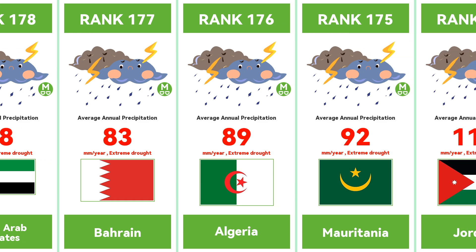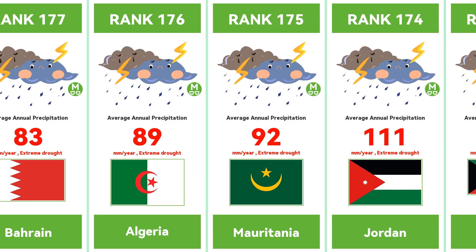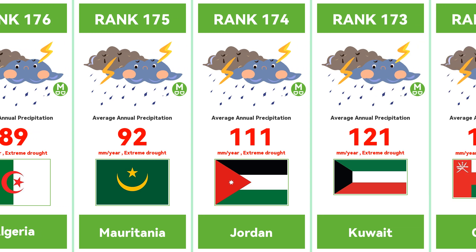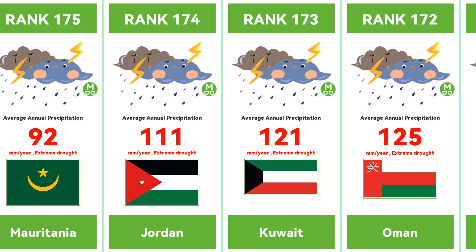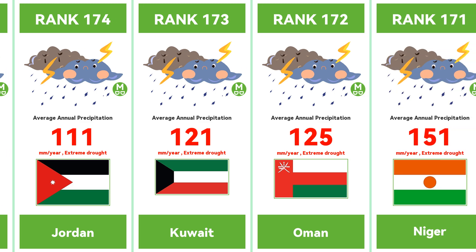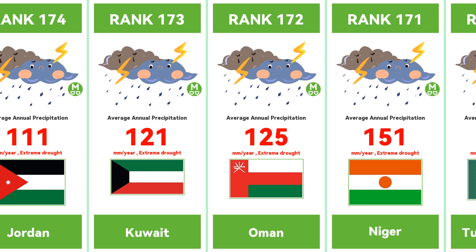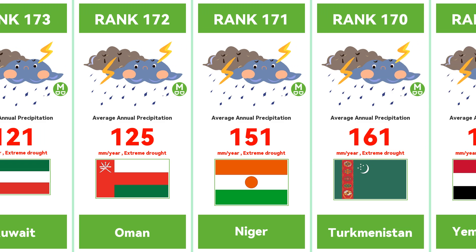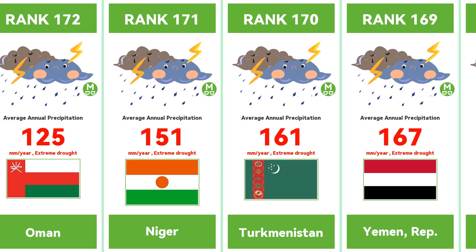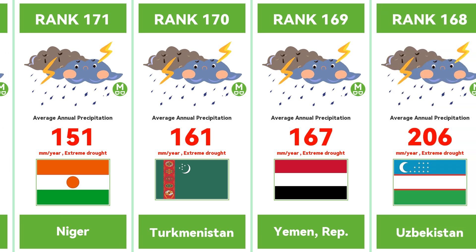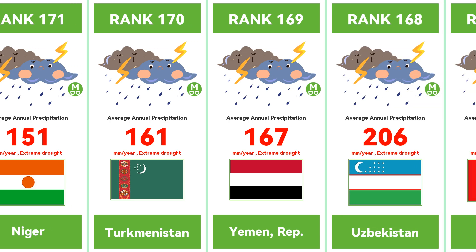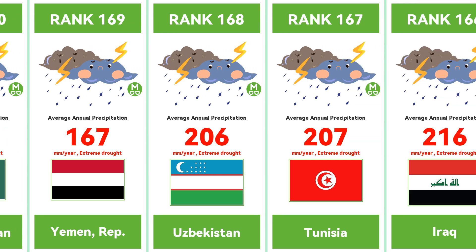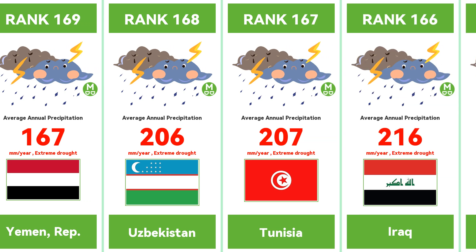In this statistics, we will use the annual average rainfall as an indicator to measure the level of rainfall in a country. The annual average rainfall refers to the average accumulated precipitation in a certain area within a year. By comparing the annual average precipitation of different countries, we can better understand the differences in global rainfall distribution and the climate characteristics of each country.